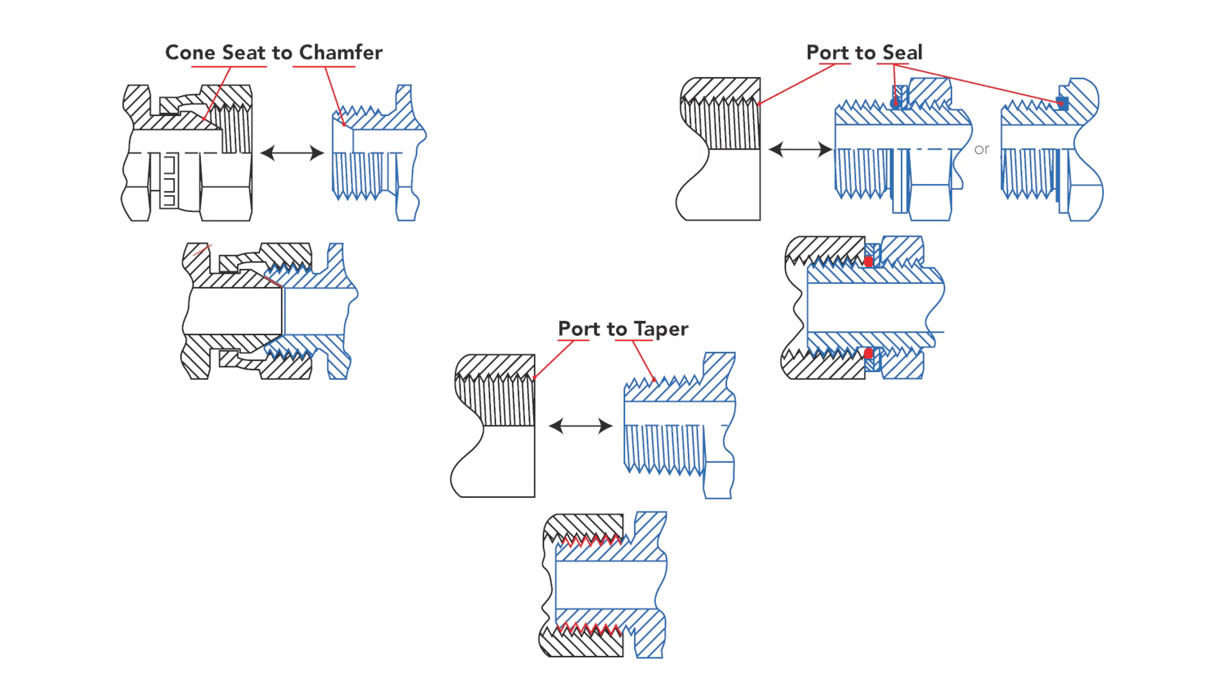For tapered threads, a seal is accomplished via thread wedging with additional support from thread dope or tape.